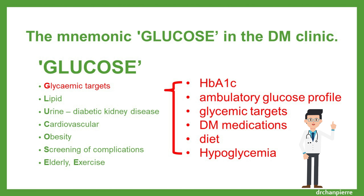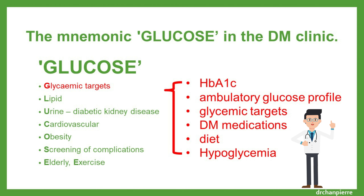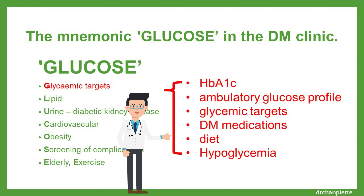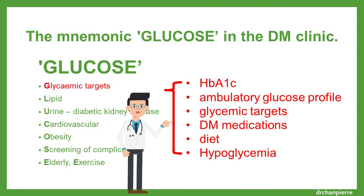G is for glycemic targets, which include HbA1c, the ambulatory glucose profile, and glycemic targets such as the A1c. Also covered is the diabetes medication, including compliance, effects and side effects, the diet and glycemic control, and any hypoglycemia in between.